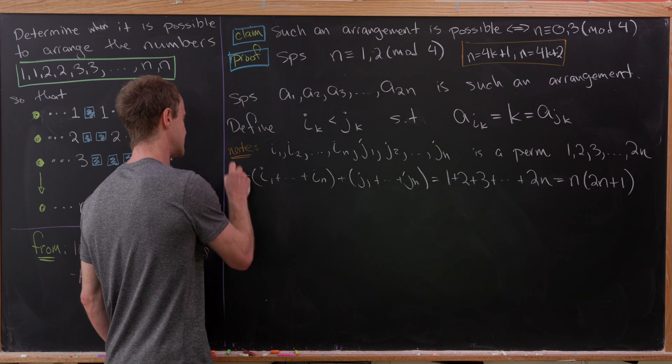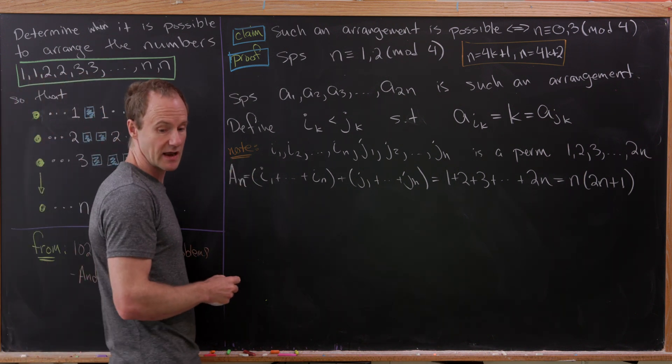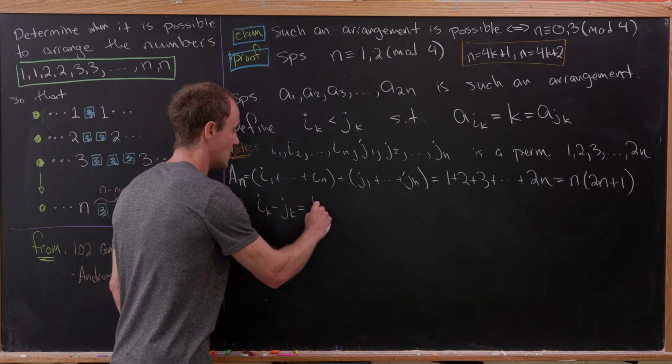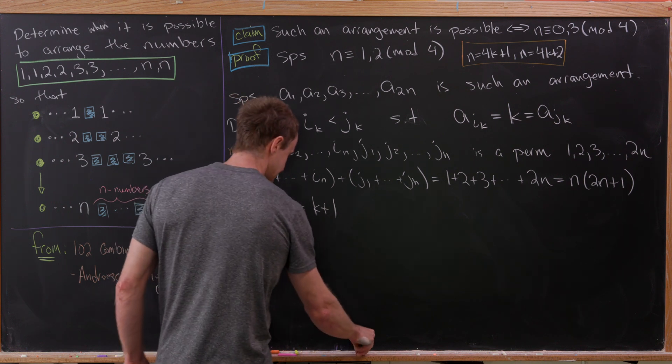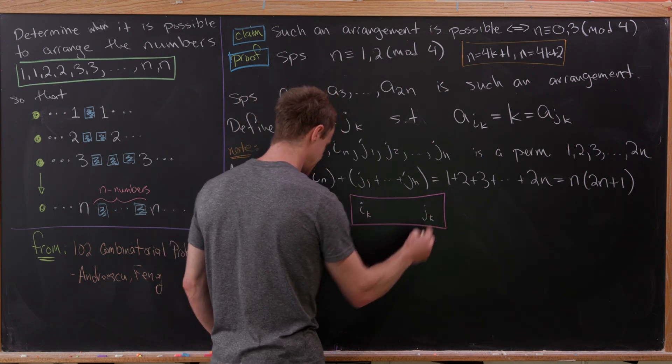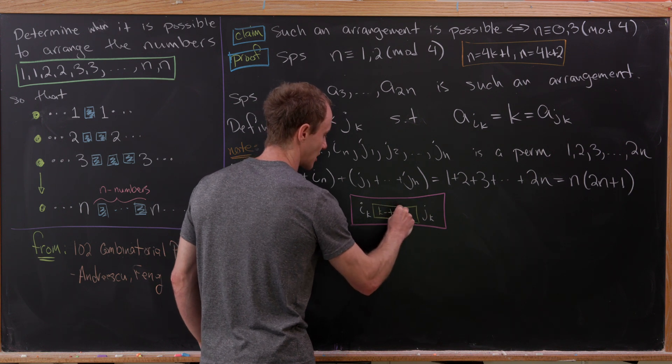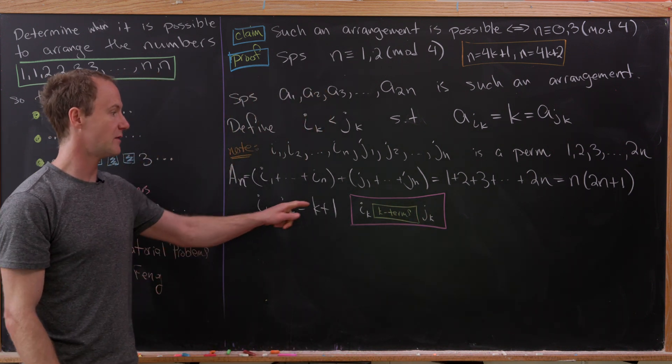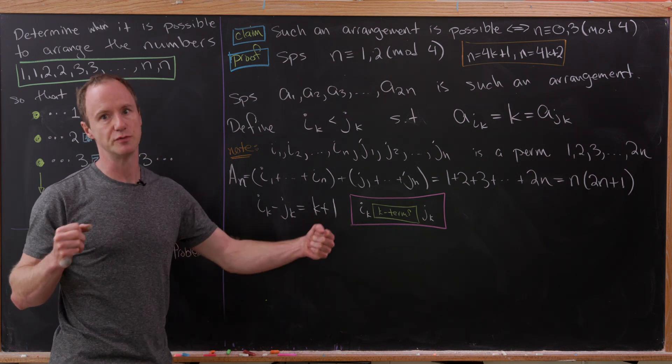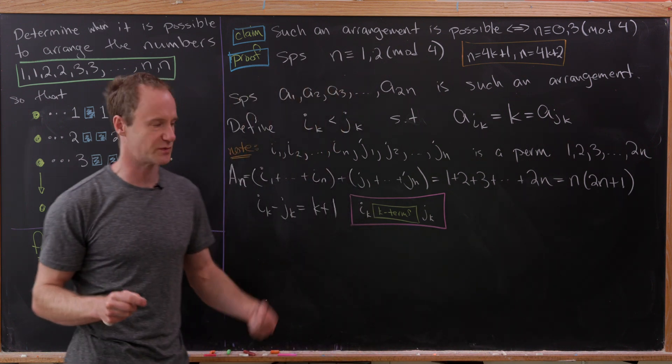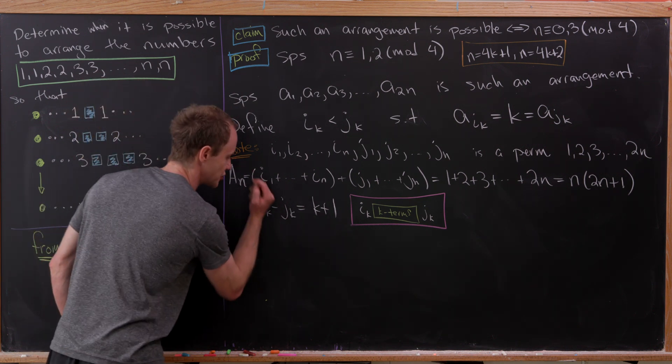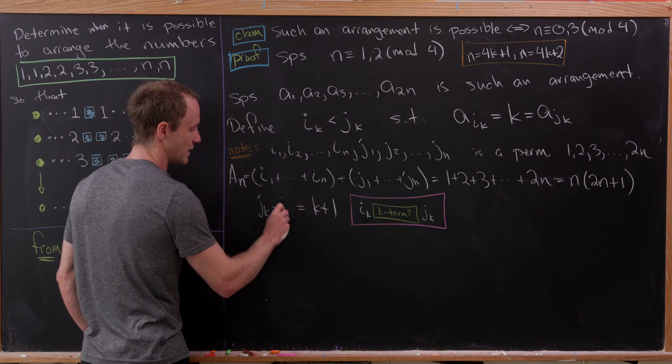I'm going to set this equal to capital A sub N to use it later. Now let's also note that if we take J sub K minus I sub K, we're going to get the number K plus 1. And why is that? We can visualize that pretty easily. That's because I sub K and J sub K have exactly K terms between them. They have K terms between them because of this rule that they tell us the position where K lives. We know by the rule that there are K numbers between those. If there are K terms between I sub K and J sub K, when you take their difference, we get K plus 1.